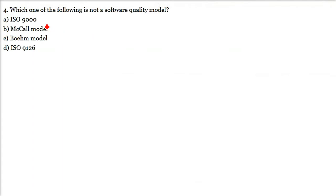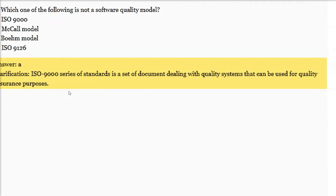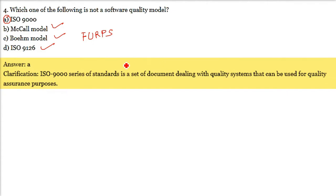Which one of the following is not a software quality model? ISO 9000 is not a software quality model - it is a series of standards dealing with quality systems for quality assurance. It is about processes: if you follow the defined processes in a proper manner, covering quality control, quality assurance, and planning, then McCall model, Boehm model, and ISO 9126 are the actual software quality models.